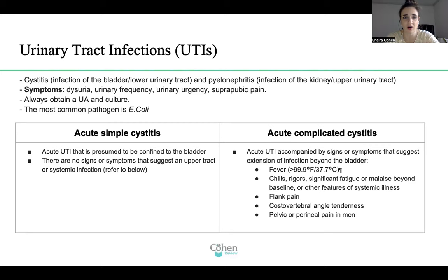Now we have acute simple cystitis and complicated cystitis. Acute simple cystitis is a UTI that is presumed to be confined to the bladder, with no signs or symptoms that suggest upper tract or systemic infection.